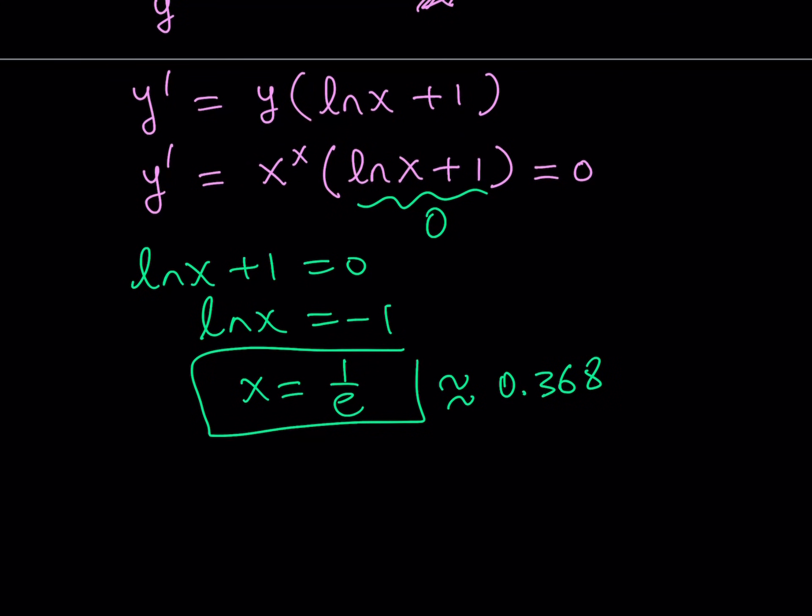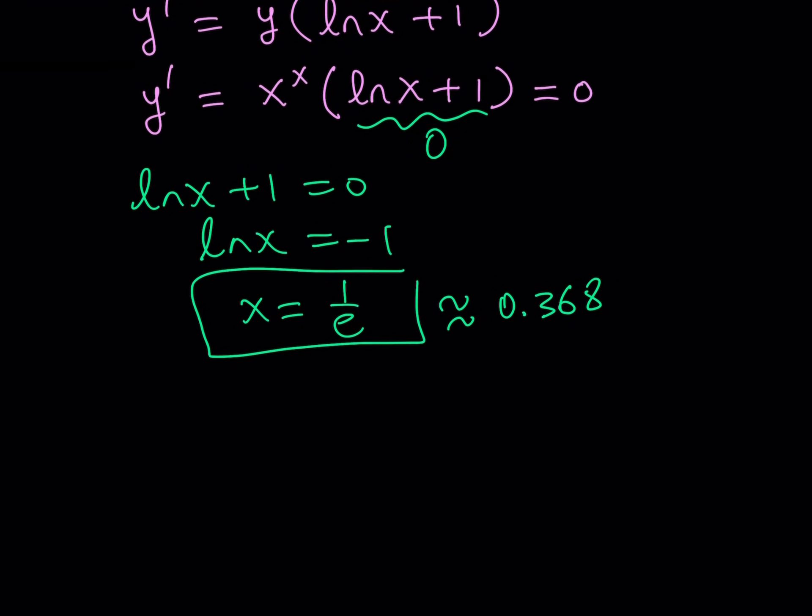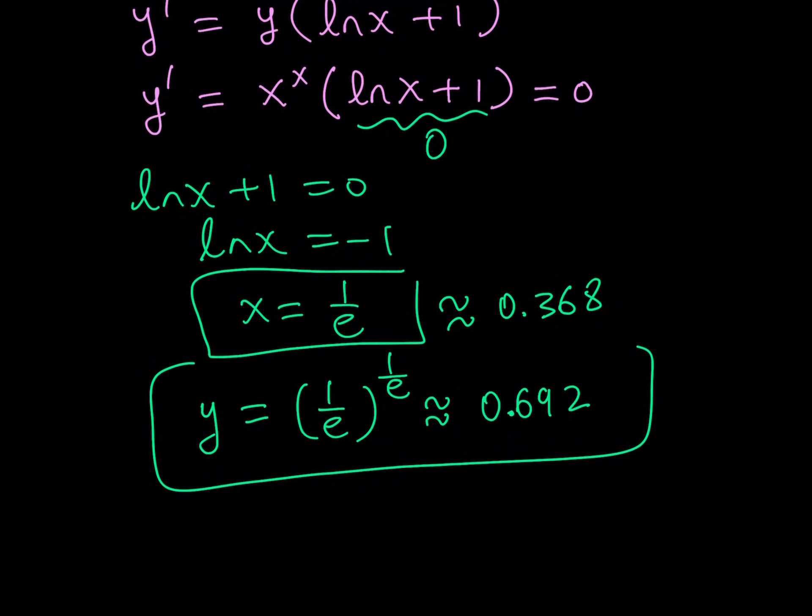Now, what does this give us? This gives us a value for the function, right, where the function has a minimum or maximum. But, of course, you can look at the second derivative to understand whether it's a minima or maxima, so on and so forth. But let's go ahead and find the y value as well. This is where things get more interesting. Obviously, y is going to be 1 over e to the power 1 over e. And do you think that's going to be a small number or a larger number? That's kind of interesting. And it's going to be actually larger than this one because you're kind of taking the roots of a decimal number. It just makes it bigger. So it's like 0.692-ish.